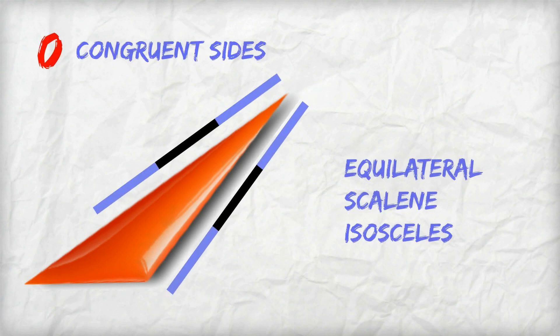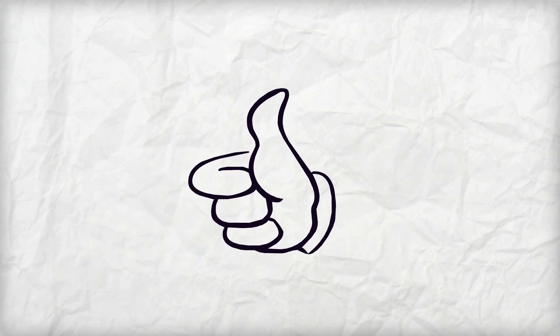Ready? How many sides are the same here? The simple ruler shows it has zero congruent sides, so it's a scalene triangle. Thumbs up if you got it right.